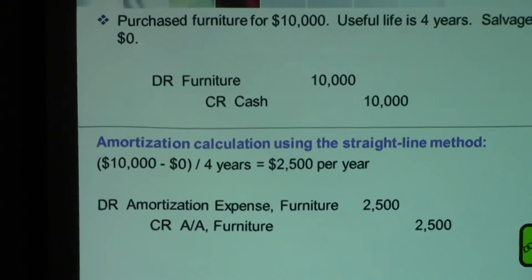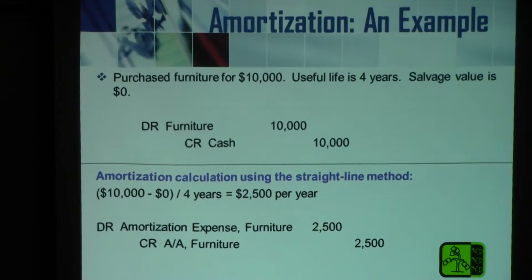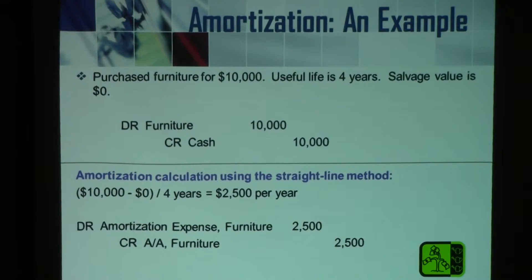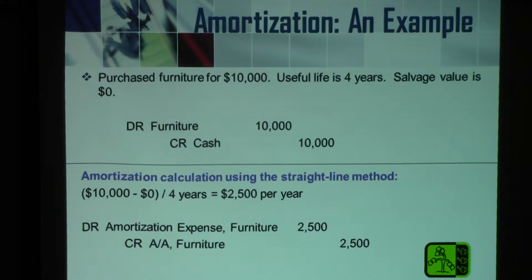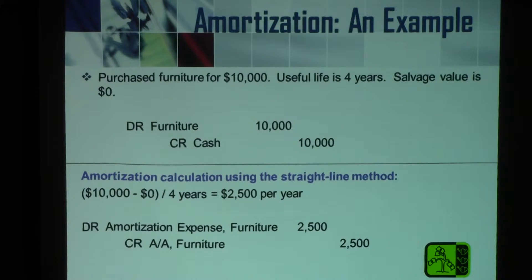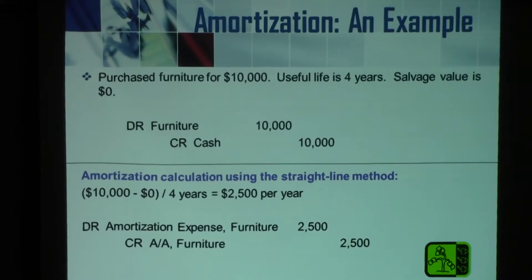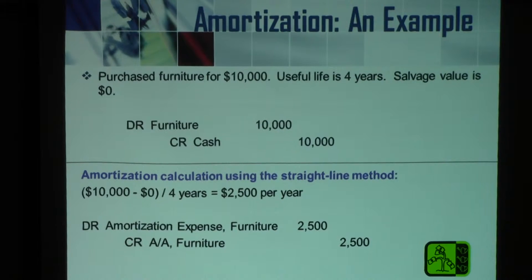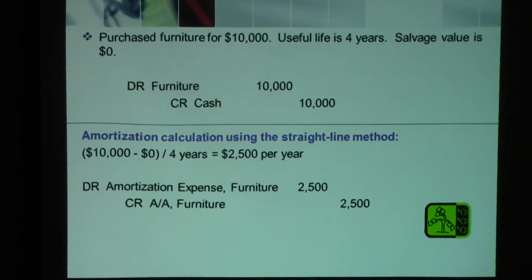As a worked example: you purchased furniture for $10,000, with a useful life of four years and a salvage value of $0. The original purchase entry is: debit Furniture $10,000, credit Cash $10,000. Then the amortization calculation is ($10,000 − $0) ÷ 4 = $2,500 per year. The adjusting entry is: debit Amortization Expense — Furniture $2,500, credit Accumulated Amortization — Furniture $2,500. It is very important to understand the difference between the original purchase entry and the amortization adjusting entry.